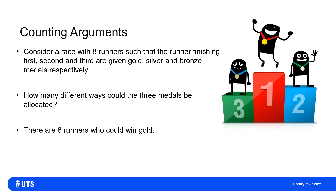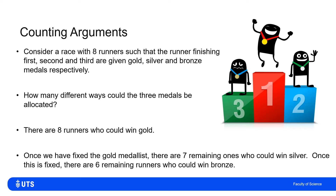Well, if I start at the top, there are eight runners who could win gold. Once I've allocated the gold, there are seven remaining runners who could win silver. So once I fix the gold and the silver, there are six remaining runners who could win bronze.